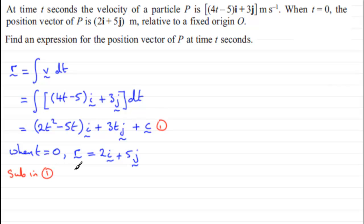So if we say sub in 1, what we've got is that r, 2i plus 5j, in other words. So therefore, 2i plus 5j equals. And substituting t equals 0 into here gives us nothing. t equals 0 into here gives us nothing. So we're just left with c. So there's our constant vector.